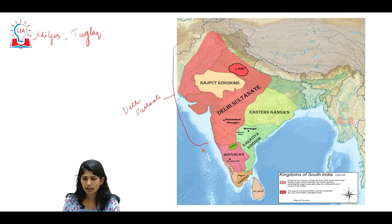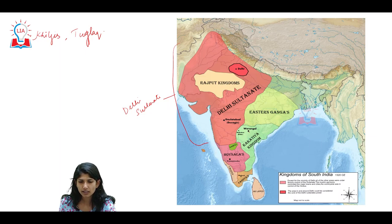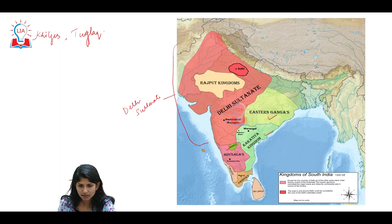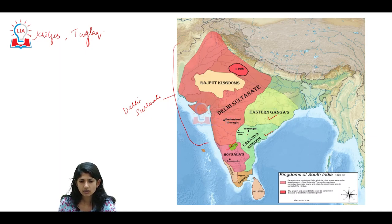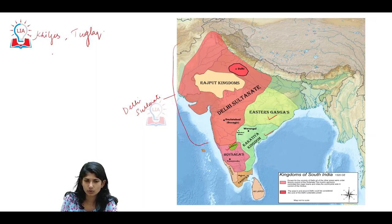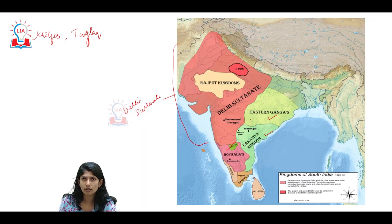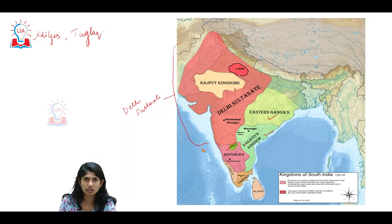The Khiljis and Tughlaqs would march down towards the south. At that point of time, the south was dominated by the Eastern Gangas, Kakatiyas of Warangal, Hoysalas, and Kampilis. This was their southern setup during the time of the Delhi Sultanate. The Khiljis used to march down south thinking they'd come, loot and plunder, take huge amounts, make them pay tax, go back, and build their empire based on the acquired riches.